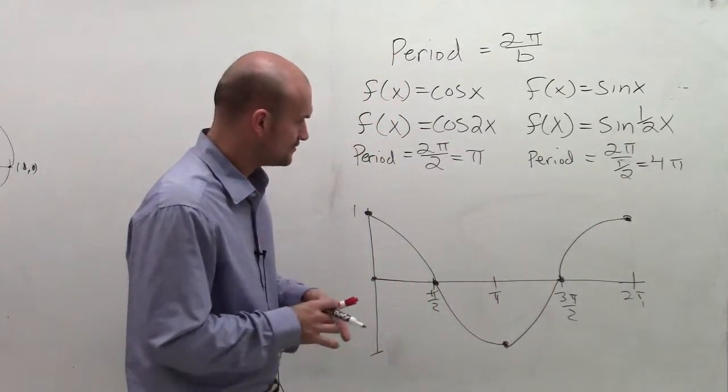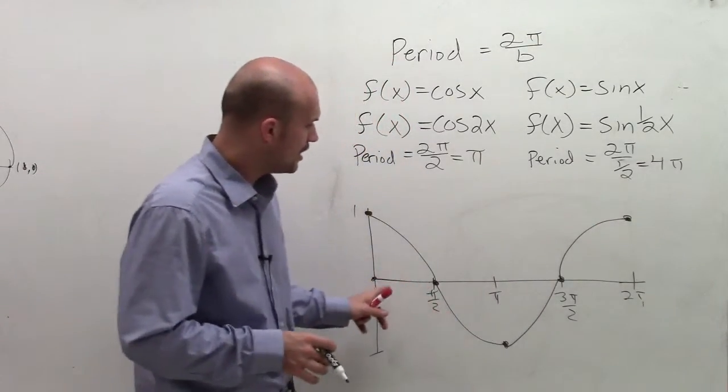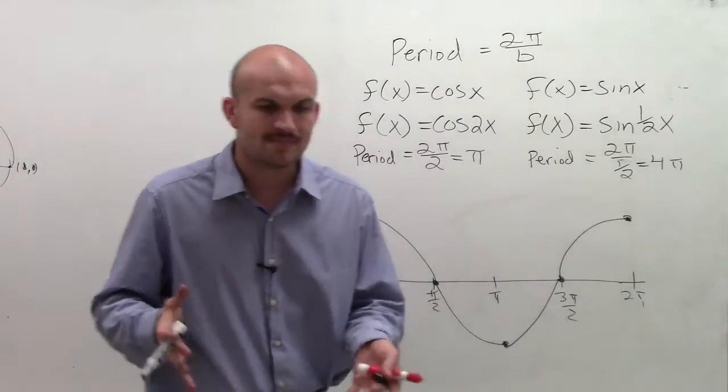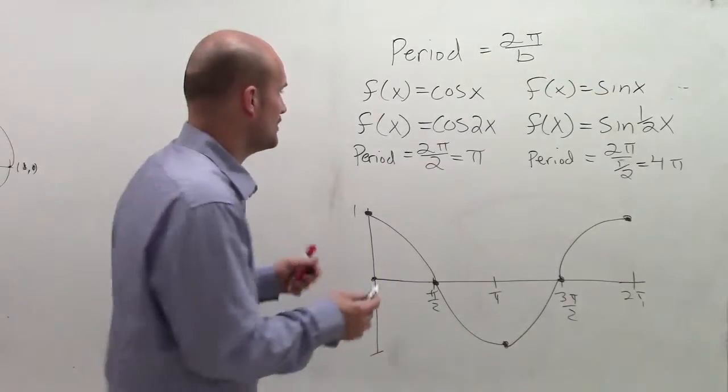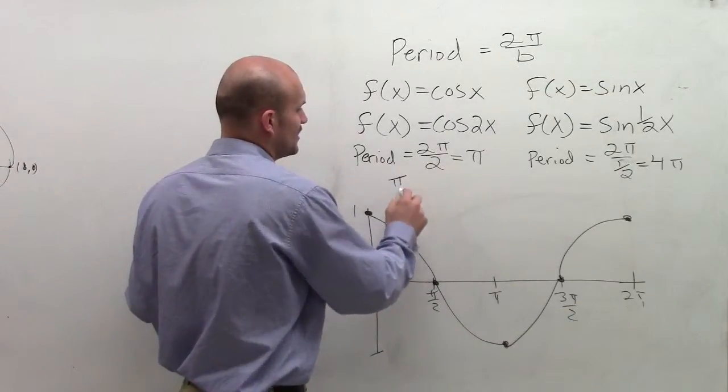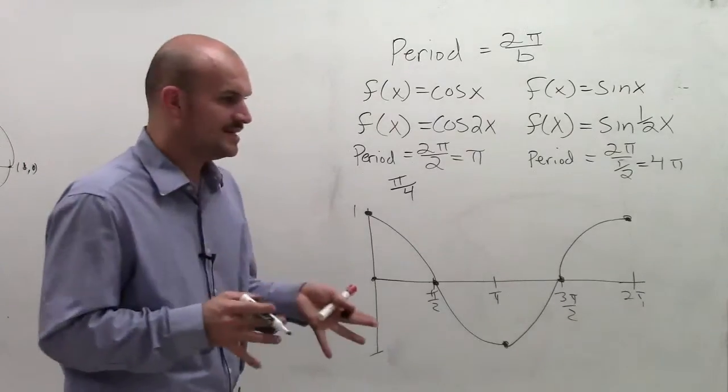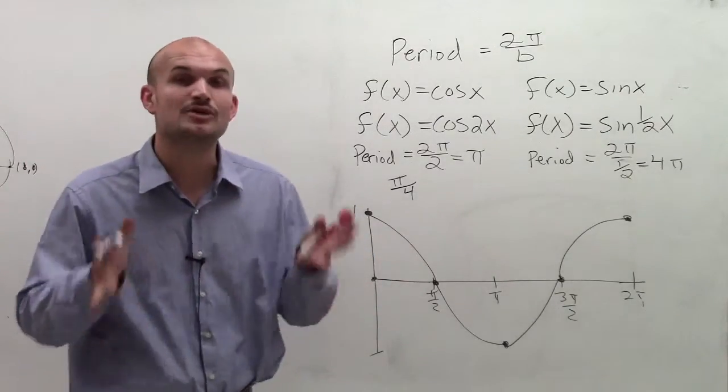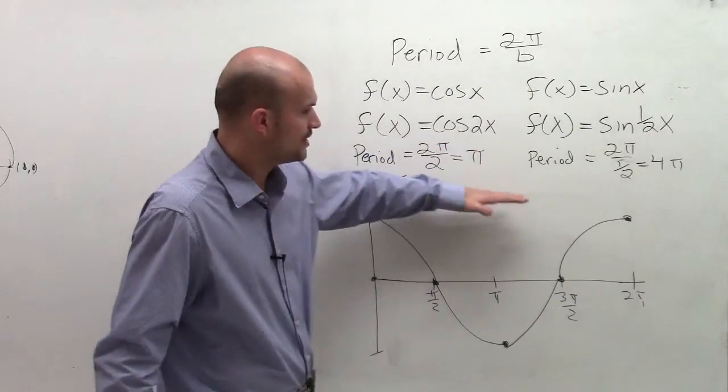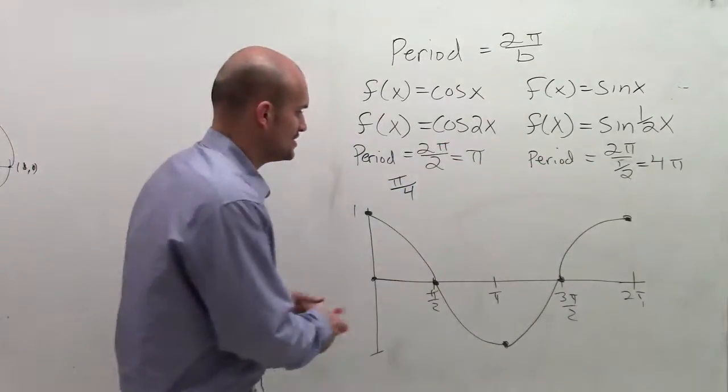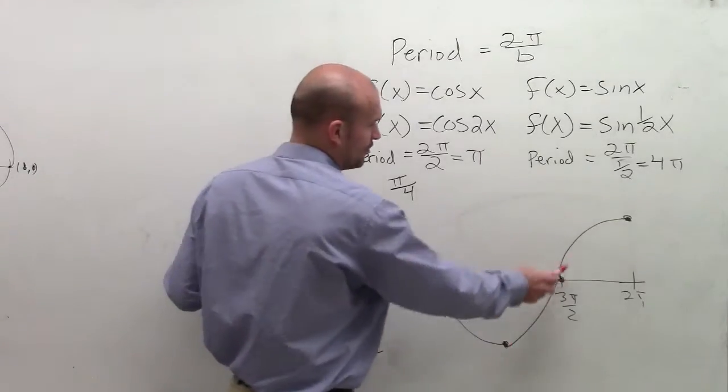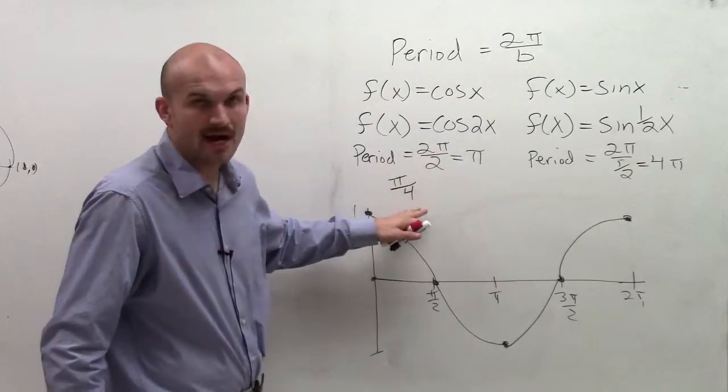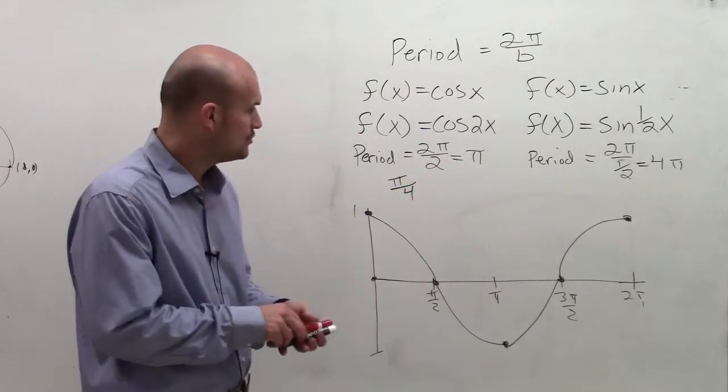Now, what you notice is there are, well, essentially we have really our four important points. So what I want to do to find my new critical points is I'm going to take my new period and divide it by 4. So what that means is now, at every interval of pi over 4, that's going to be my new critical point. Because if you notice, my original period was 2 pi and there were kind of my four critical points.